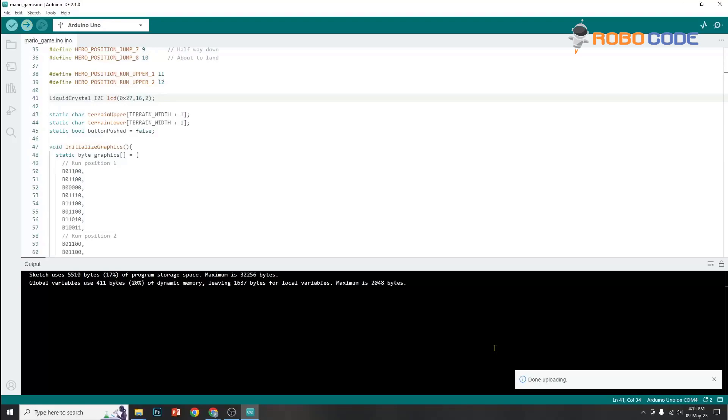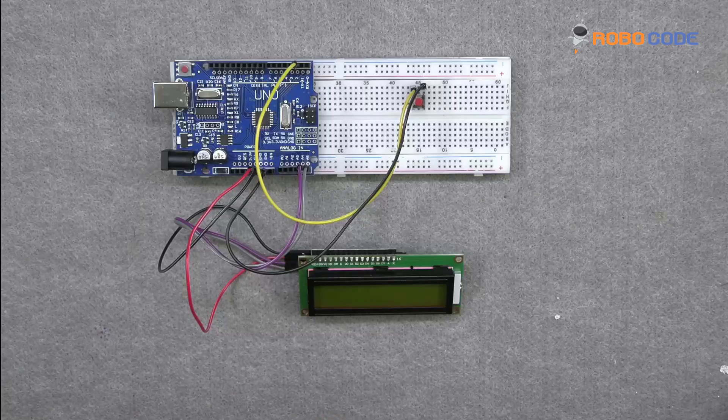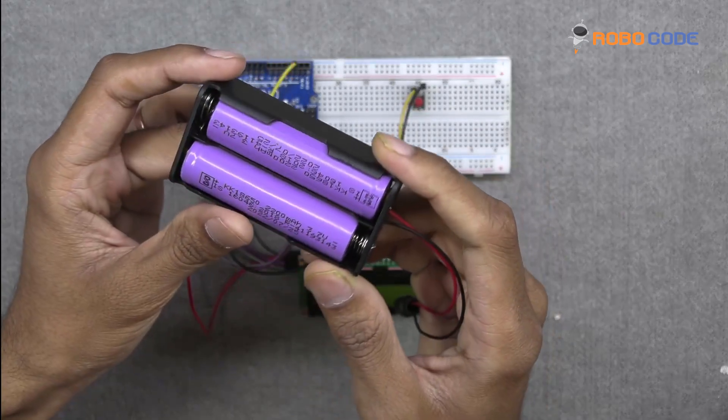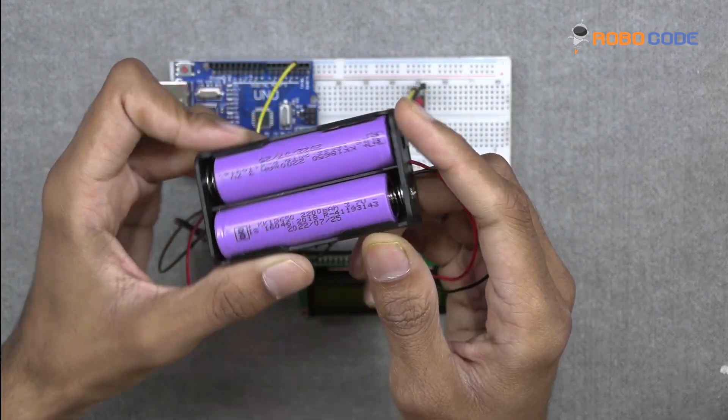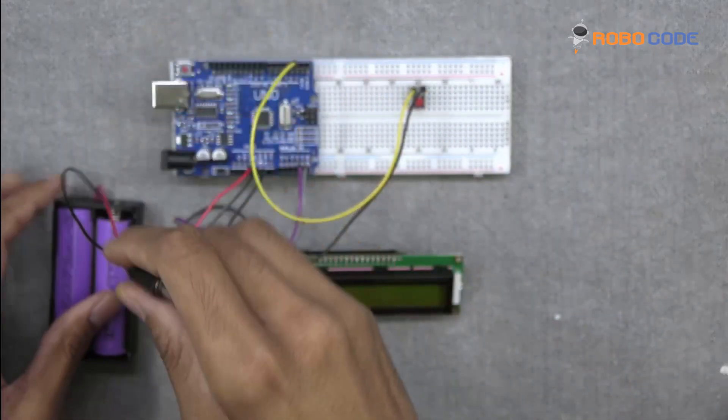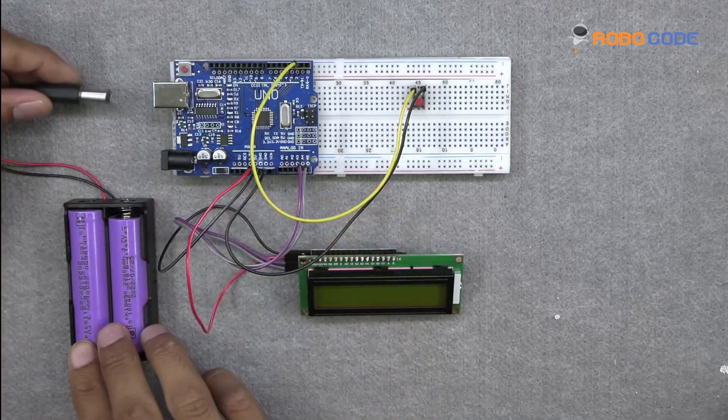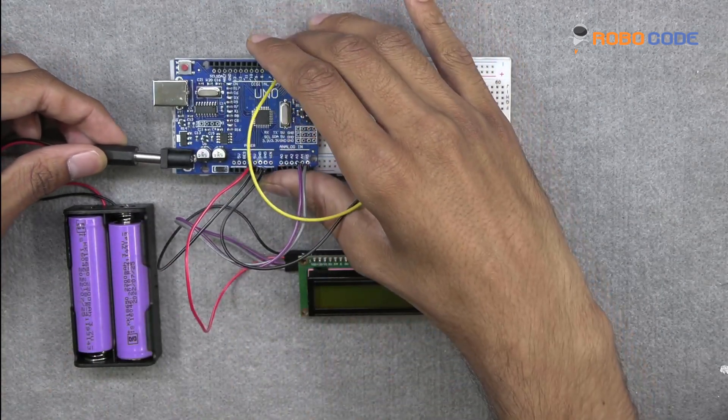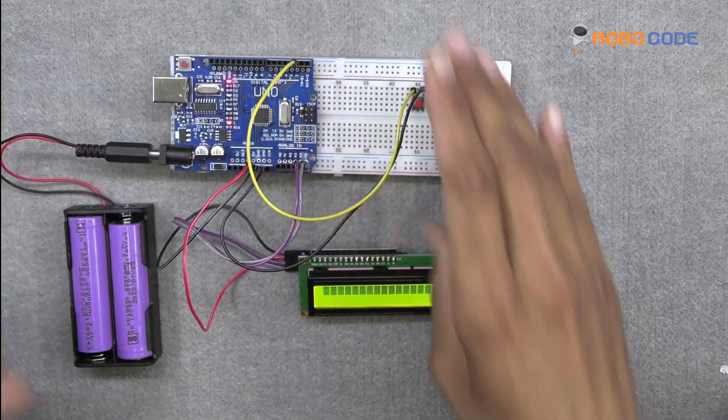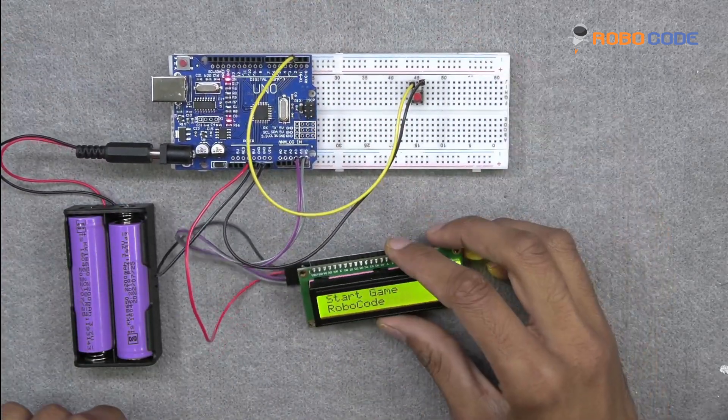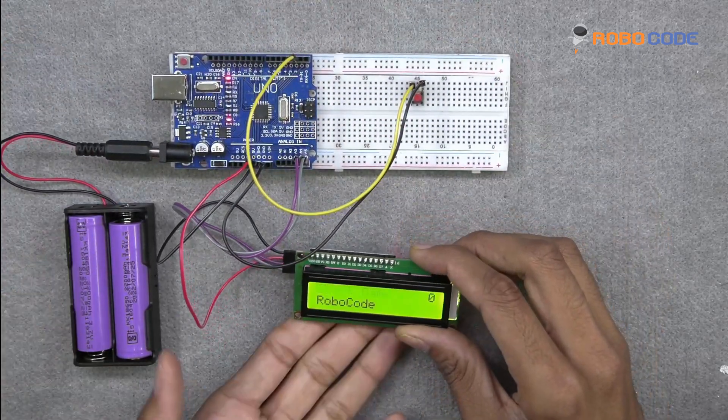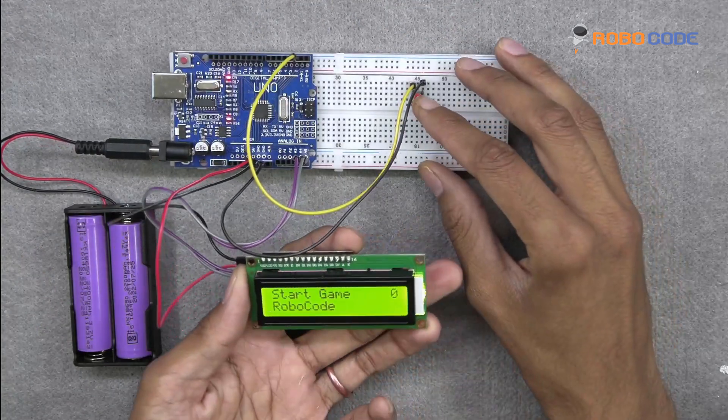If there are no errors, then the code would be uploaded. We'll remove the USB cable and take the 3.7 volt battery along with the holder. We will insert that in Arduino Uno. If the circuit is proper and the code is proper, then you will see the display showing Start Game, RoboCode, and the value zero.